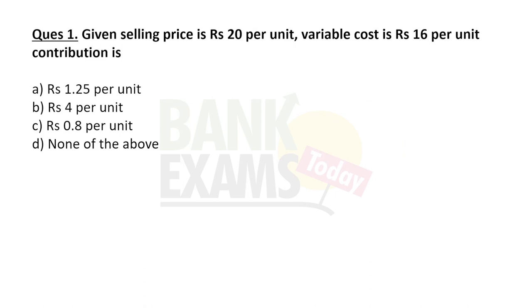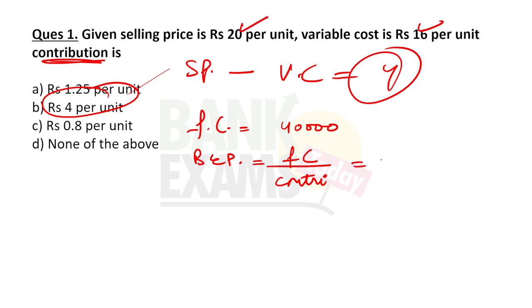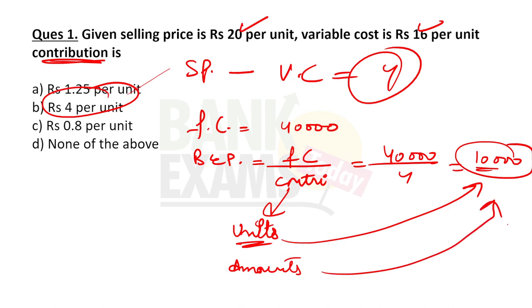For example, if the selling price is 20 rupees per unit and variable cost is 16 rupees per unit, the contribution is 20 minus 16, which is 4 rupees per unit. If the fixed cost is 40,000, then the break-even point is 40,000 divided by 4, which equals 10,000 units. If contribution is given per unit, you get the break-even point in units; if in rupees amount, you get it in amount.